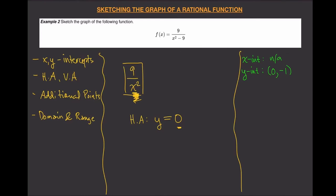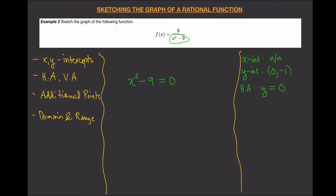So our horizontal asymptote is y equals zero — as x goes to infinity, the expression goes closer and closer to zero. For the vertical asymptote, equate the denominator to zero: x squared minus nine equals zero, which factors as (x+3)(x-3) equals zero. You get two solutions: x equals negative three and x equals positive three. So there are two vertical asymptotes.